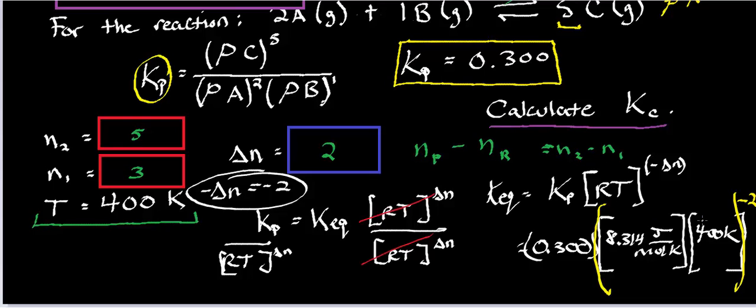So I'm going to get my calculator and go ahead and calculate this. So I have 8.314 times 400. I'm going to take that to the negative 2 power and then multiply by 0.3. And it's going to be something very, very, very small number here. So my KEQ is going to be 2.7 times 10 to the minus 8th at 400 Kelvin, that is.